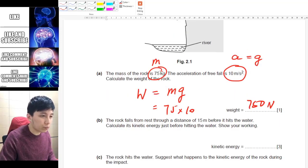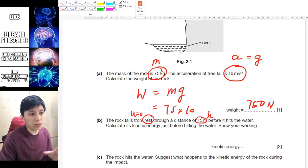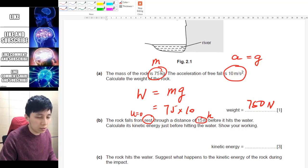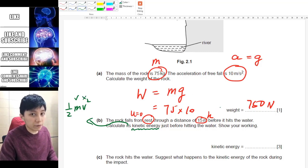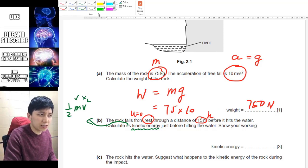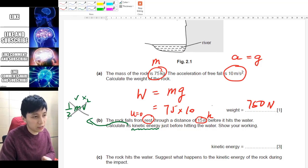Part b, it says the rock falls from rest, this is important, so that means u equal to zero, initial velocity is zero, through a distance of 50 meters, so this is h. Again I would recommend you to put down the variable next to it before it hits the water. So calculate the kinetic energy before hitting the water, and so if you just look at the question itself, the normal intuition will tell you, oh if you see kinetic energy, think about the kinetic energy formula. And if you do that, that is half mv squared, by the way you need to memorize the equation in IGCSE. And in this case you'll find out, hey you have got m, but you don't have v velocity, the final velocity, you don't have that.